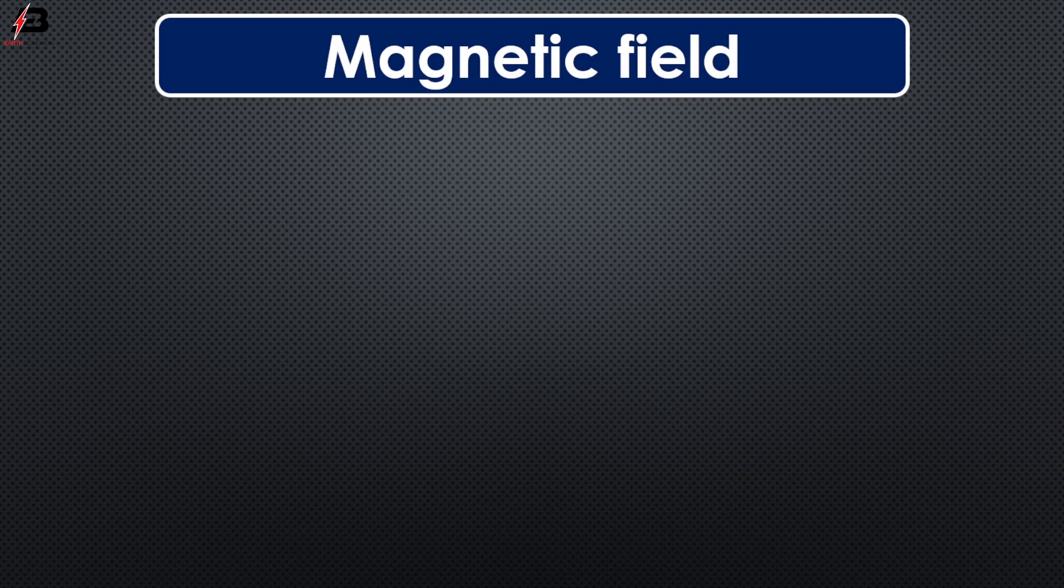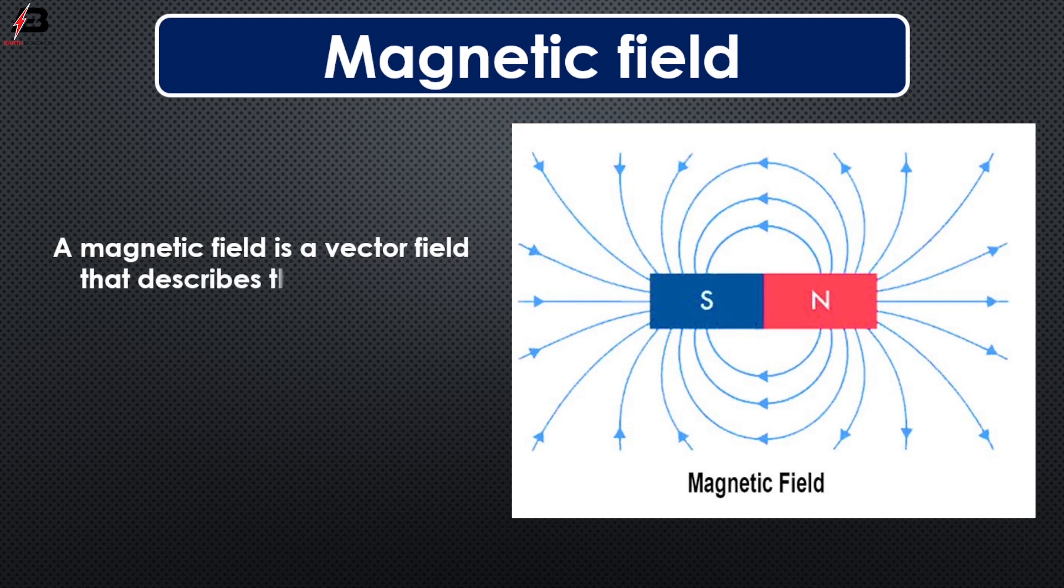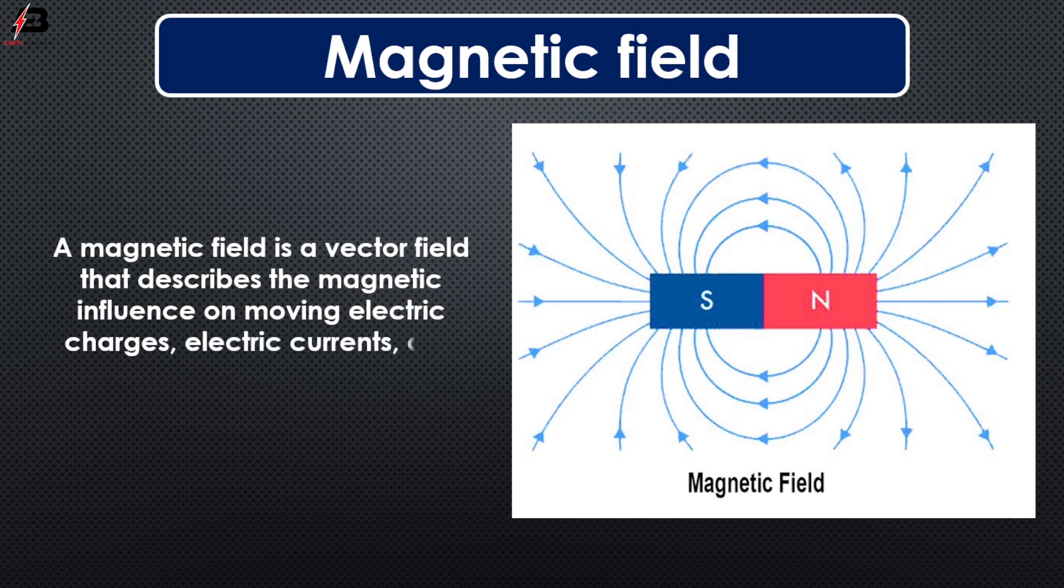So viewers, let's start. Magnetic field. A magnetic field is a vector field that describes the magnetic influence on moving electric charges, electric currents, and magnetic materials.